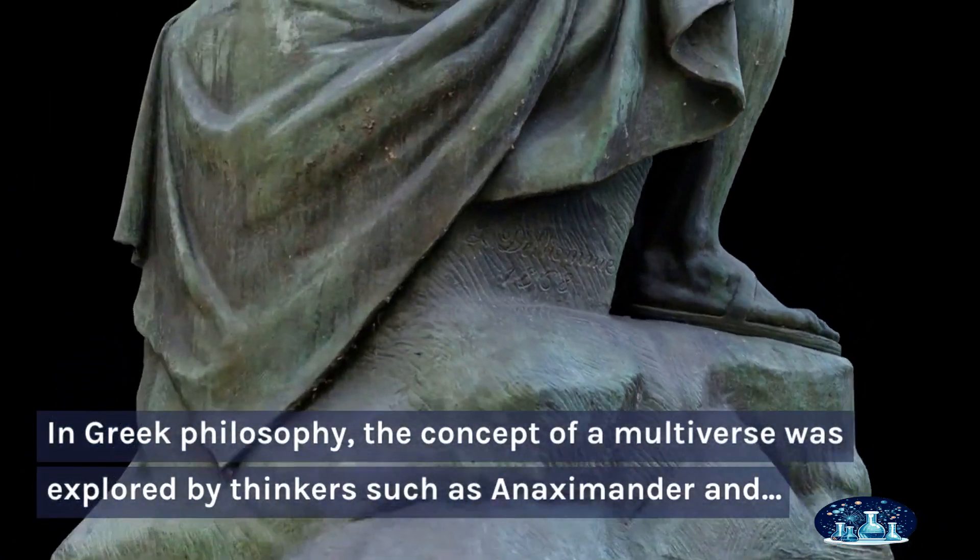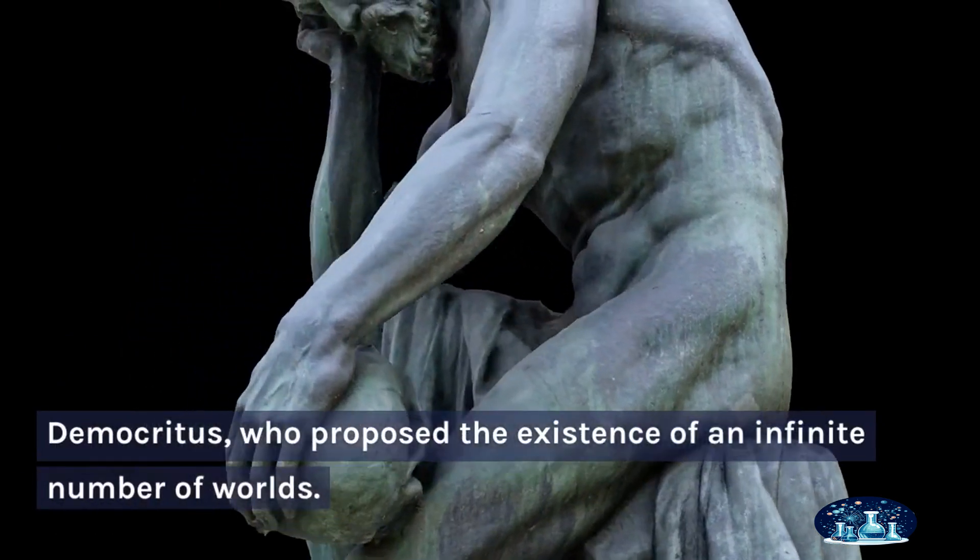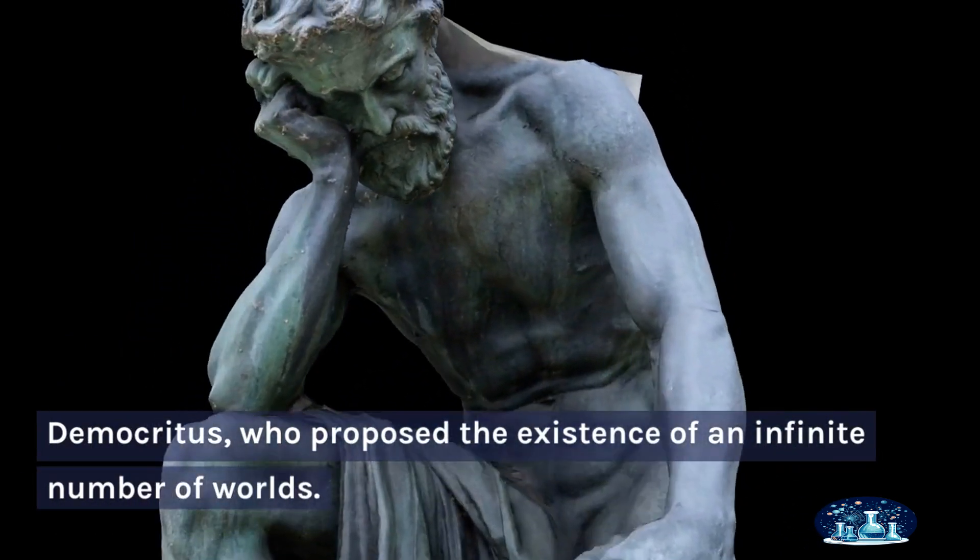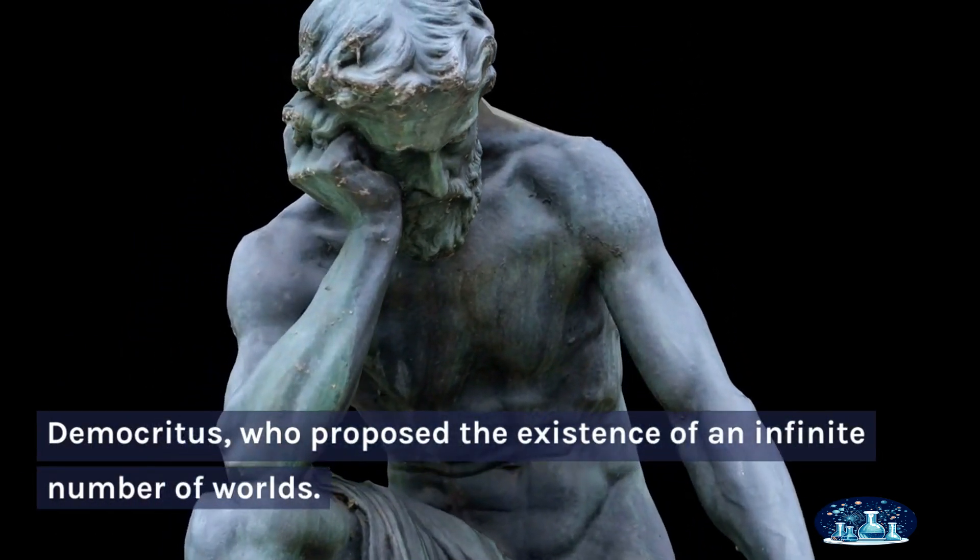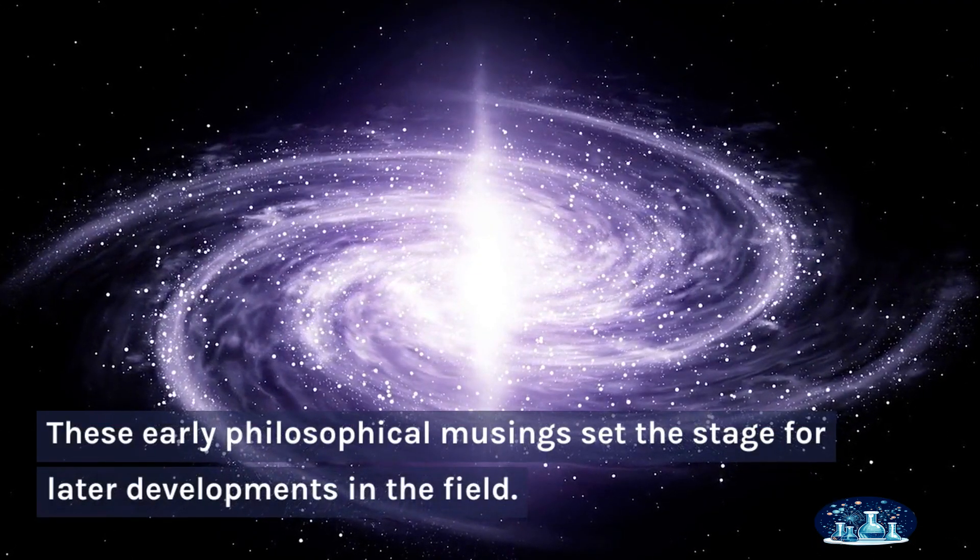In Greek philosophy, the concept of a multiverse was explored by thinkers such as Anaximander and Democritus, who proposed the existence of an infinite number of worlds. These early philosophical musings set the stage for later developments in the field.